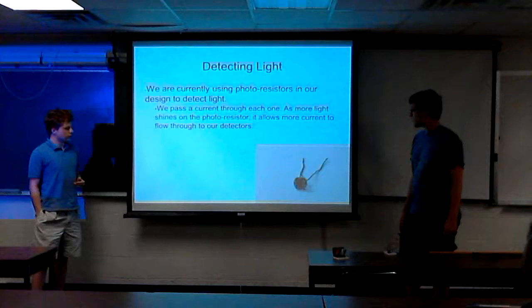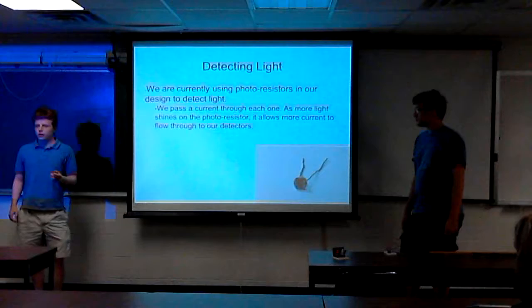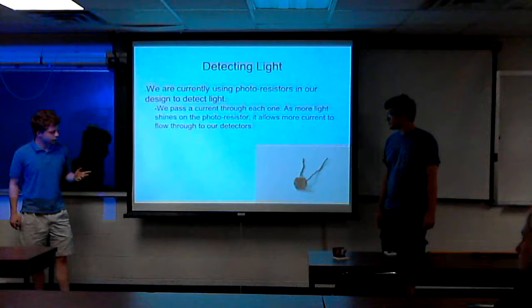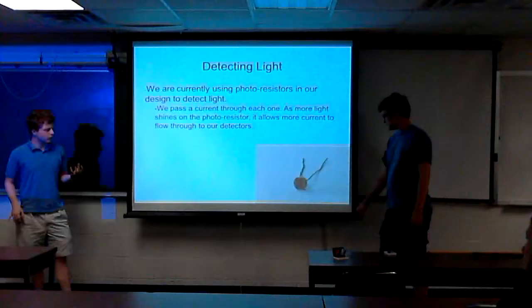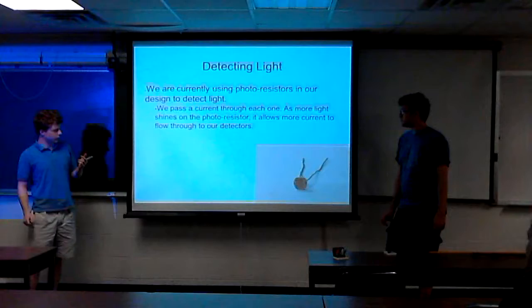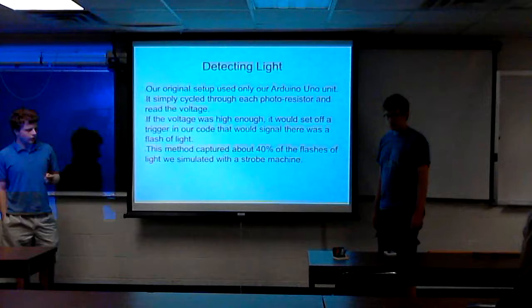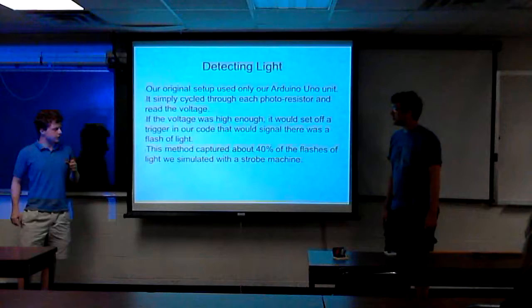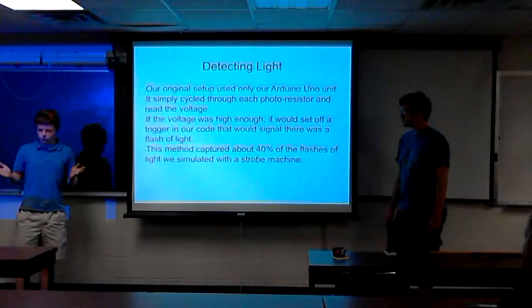So for detecting the light, we used photoresistors. For those of you who don't know what those are, we pass a current through the little thing down there in the right. And as more light is shown on the little photoresistor, it allows more current to pass through. So we were then able to, next slide. So we were then able to use our Arduino Uno there to read off the voltage at any instant, as fast as we could. To see if there was a sudden peak in voltage, which we would assume there was a flash of lightning.